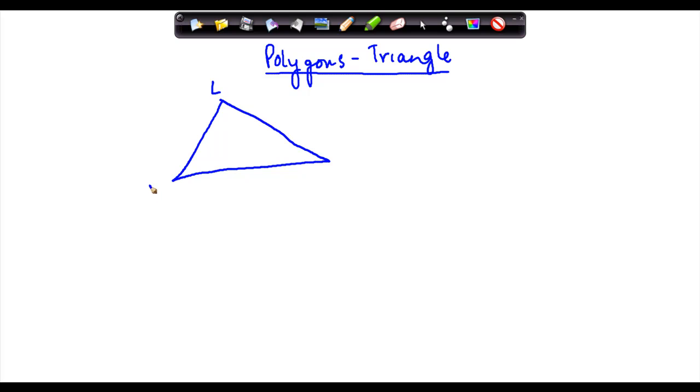Let us say this is L, M, and N. So a triangle is a three-sided polygon. In fact, the polygon with the minimum number of sides is a triangle only.